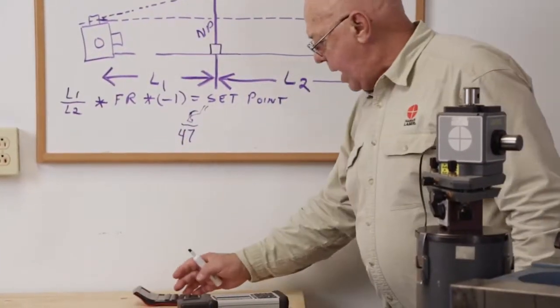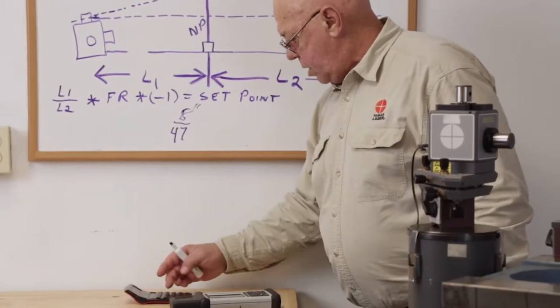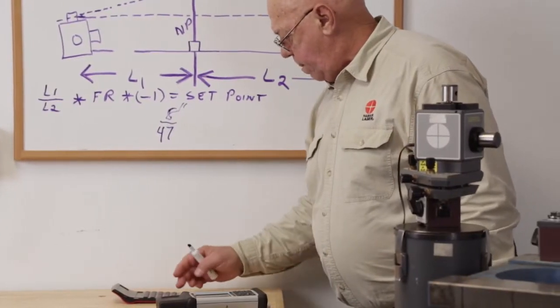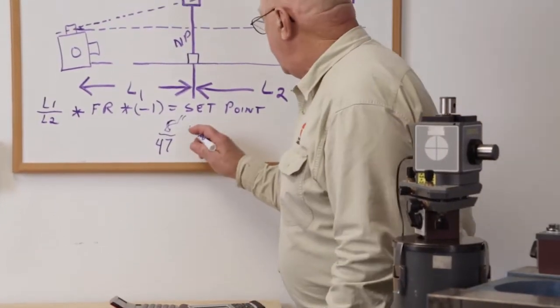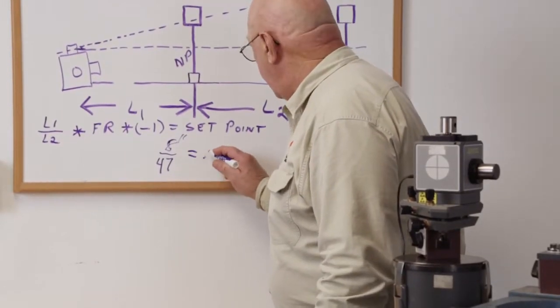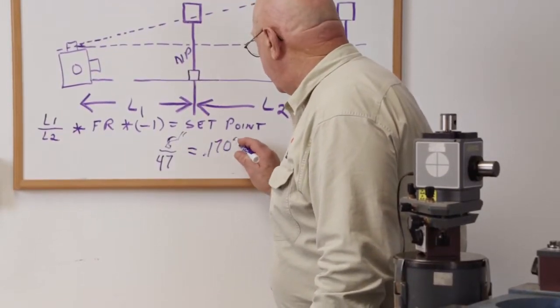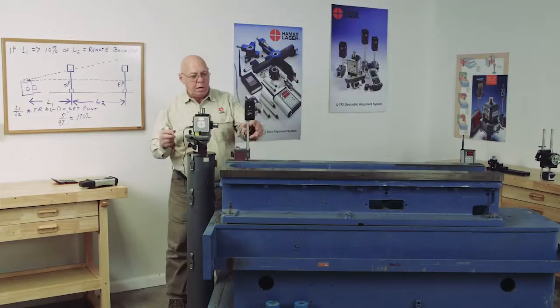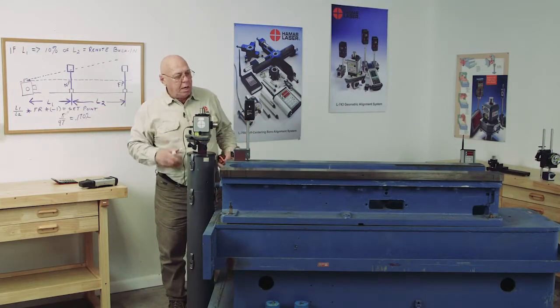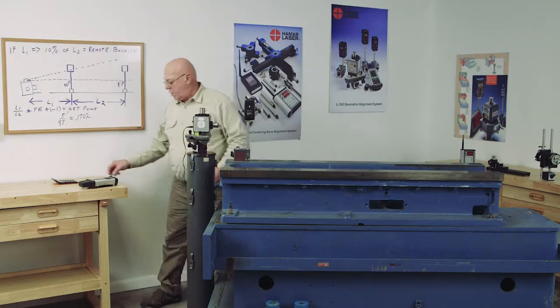So, if I divide 8 by 47, I get a multiplier of 0.1702. So, here, I'm going to turn this on, and I'm going to make this target zero on this point.